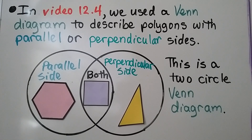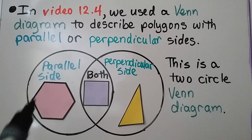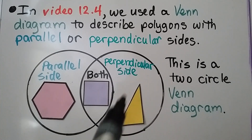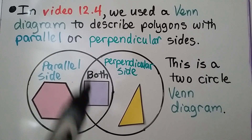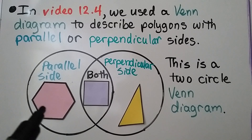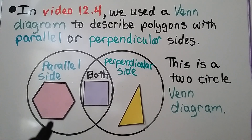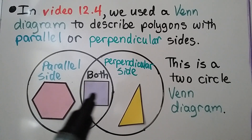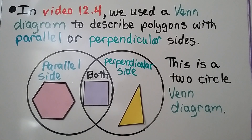In video 12.4, we used a Venn Diagram to describe polygons with parallel or perpendicular sides. This is a two-circle Venn Diagram. This one is labeled parallel sides, this one is perpendicular sides. And in the middle where they overlap, it's both. This hexagon has parallel sides. This has a perpendicular side — it makes a right angle. This has both parallel sides and perpendicular sides, so it's in the middle of the two circles.